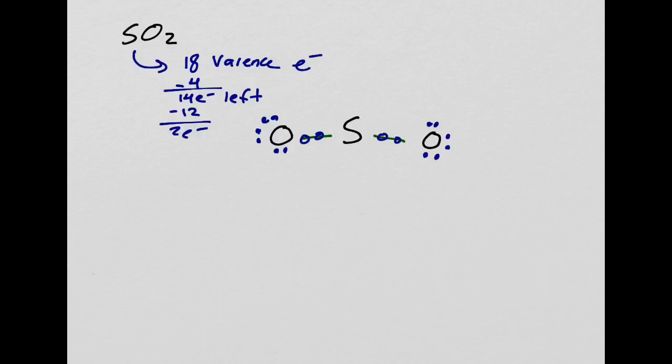The two remaining electrons go on the center atom as a lone pair. Now check the center atom — sulfur has one, two, three, four, five, six electrons. It needs two more to be happy. I have no more electrons left, so I need to make a double bond. Take two electrons from one of the surrounding oxygens to form a double bond with sulfur.